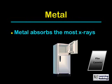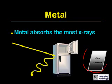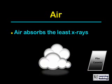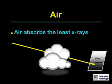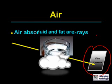Metal absorbs the most x-rays and very few of them reach the film cassette. Air, on the other hand, absorbs the least x-rays, so most will reach the film cassette and be able to darken it.